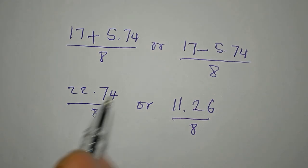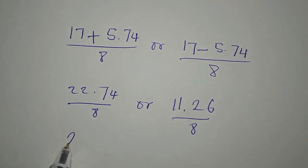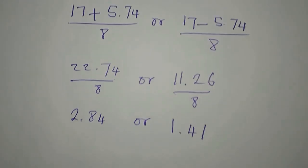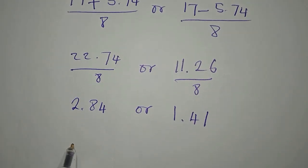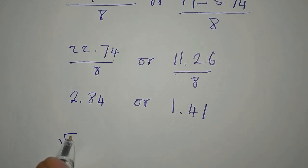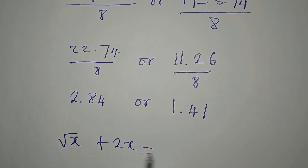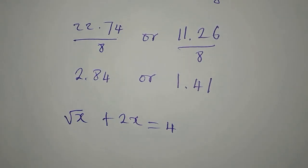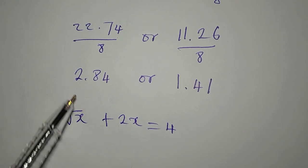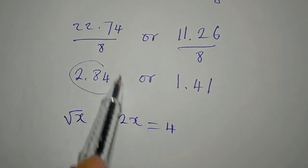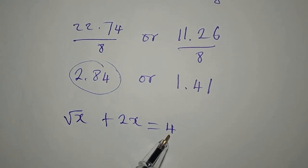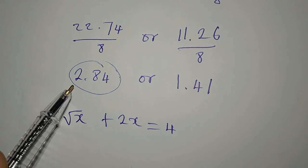Now let's divide this. If we divide this we're having approximately 2.84, or divide this we have 1.41 approximately. Now both of them are positive, this means that both of them cannot satisfy this equation square root of x plus 2x equals 4. From the look of things, this will not be able to satisfy because if you put this here it's already more than four, because 2 times 2.84 is already more than 4, therefore this is not going to satisfy.